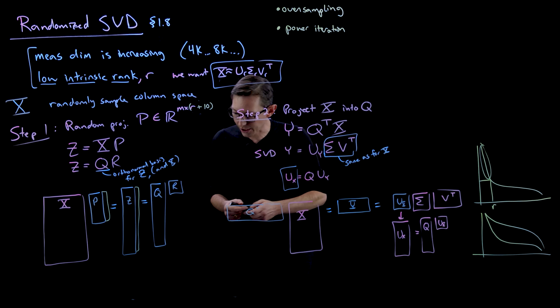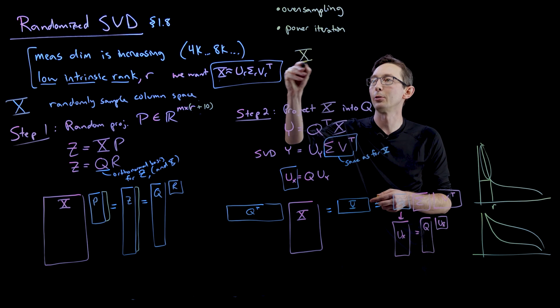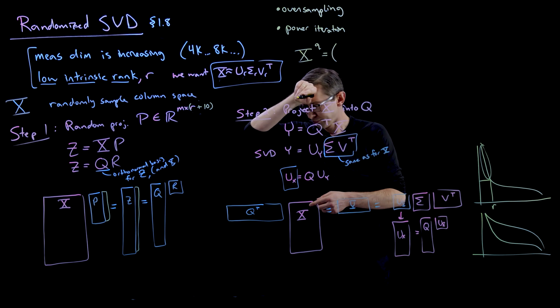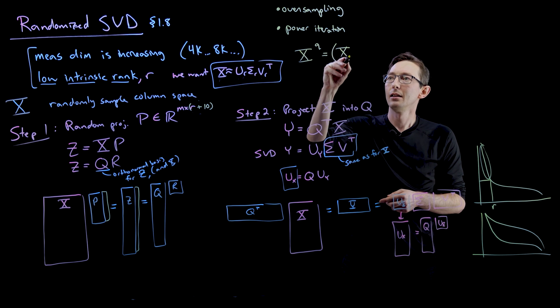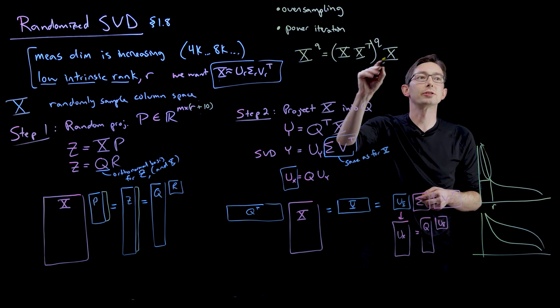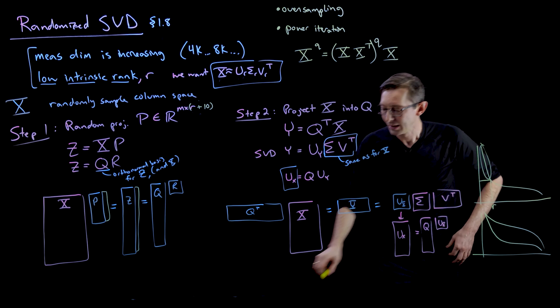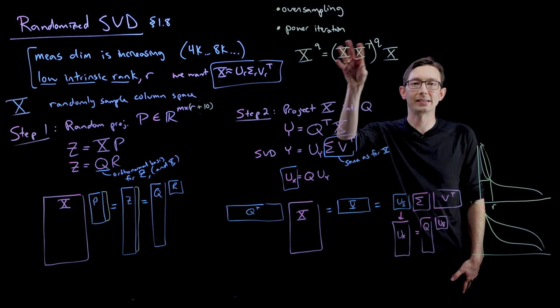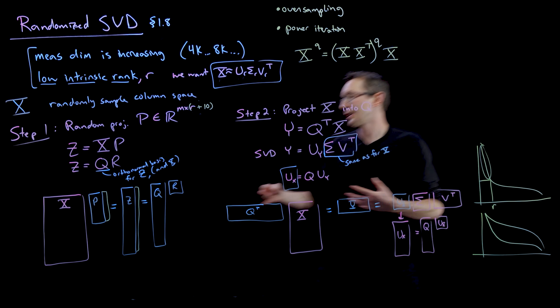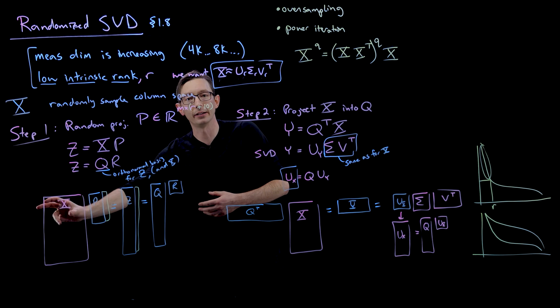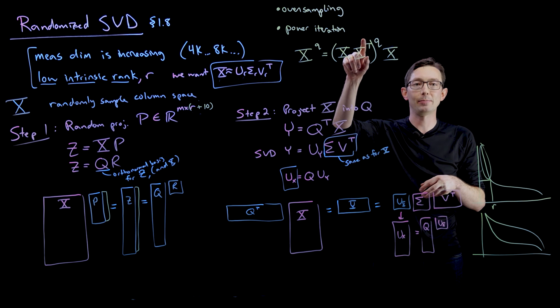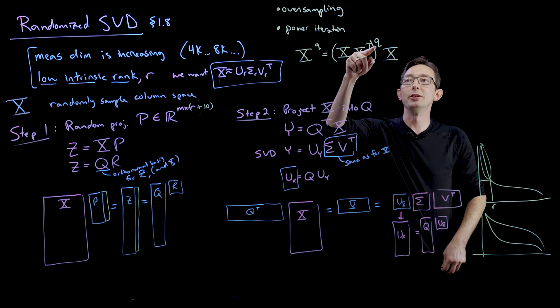The way that you actually do that is you would introduce this matrix X to the power q, which is equal to X times X transpose to the power q times your original data matrix X. Now you don't actually ever compute this massive square matrix to compute X to the power q, but instead when you're projecting X down with P, you essentially multiply it on the left by X transpose and then again by X, and you do that again and again q times.